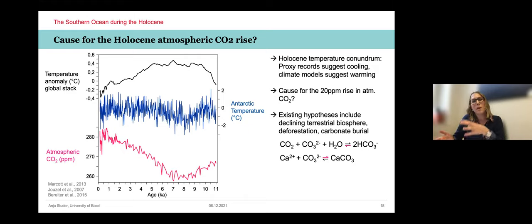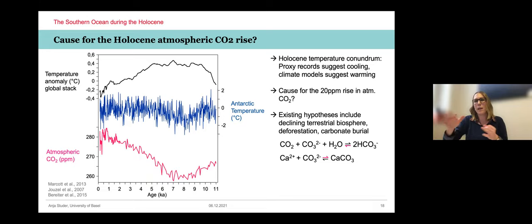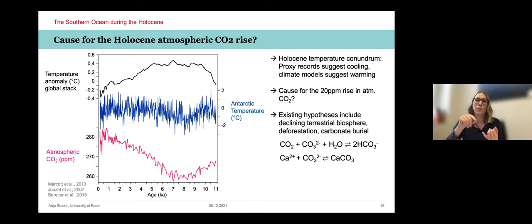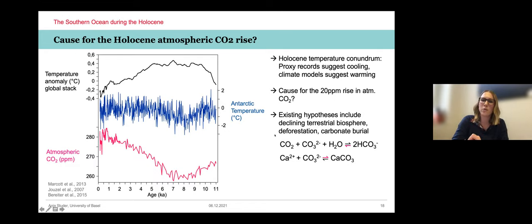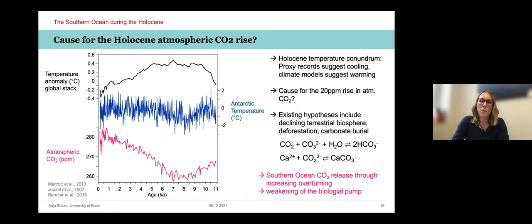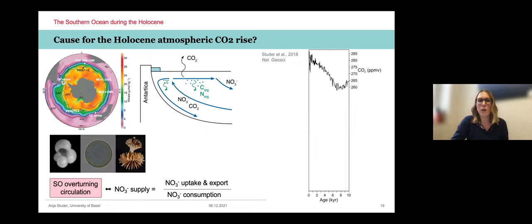Hypotheses for the CO2 rise included: a decline in the terrestrial biosphere due to global cooling and drying with fewer trees taking up less CO2; Ruddiman's hypothesis that humans cut down forests causing CO2 rise; and marine hypotheses involving deposition of carbonate — both shallow water carbonate platforms and deep carbonate formation — which generates CO2 that outgasses to the atmosphere. We proposed another hypothesis: that the Southern Ocean overturning accelerated over the Holocene and released CO2 through a weakening of the biological pump.